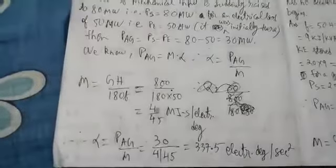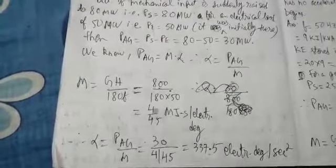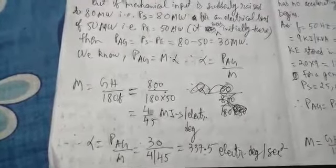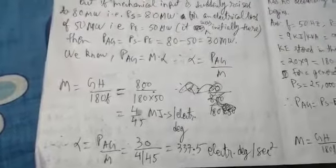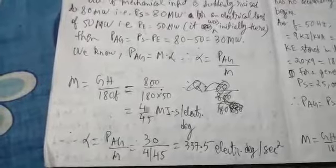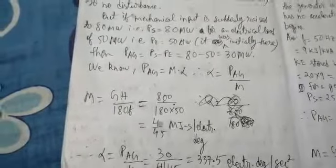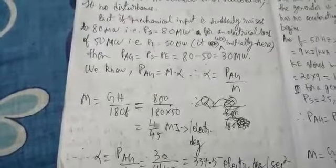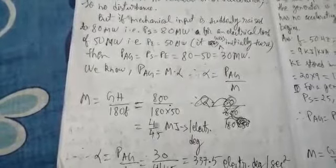After this, you can easily calculate your alpha. Alpha equals PAg by M. PAg is 30, M is 4 by 45, so that comes out to be 337.5 electrical degrees per second squared, thanks to the positive value of PAg, which is 30 megawatts. That's it for today. Thank you.